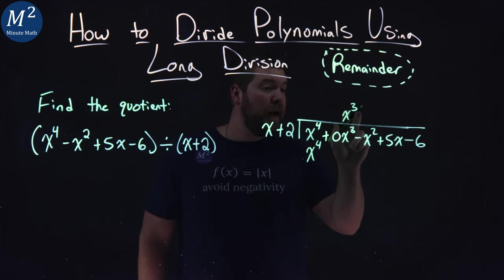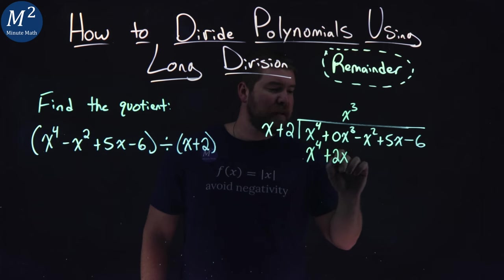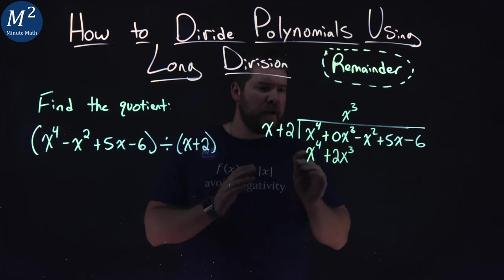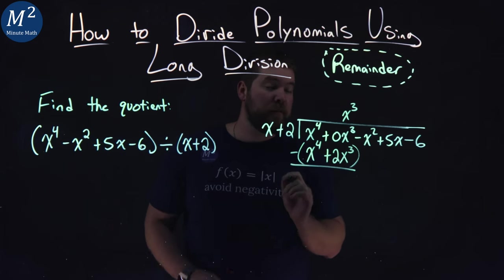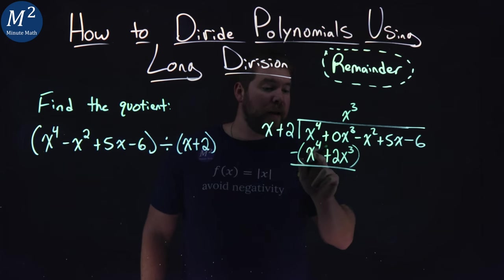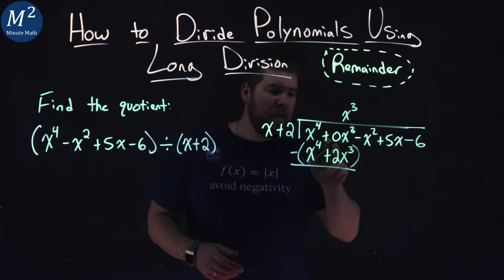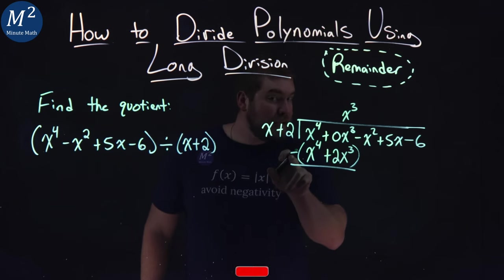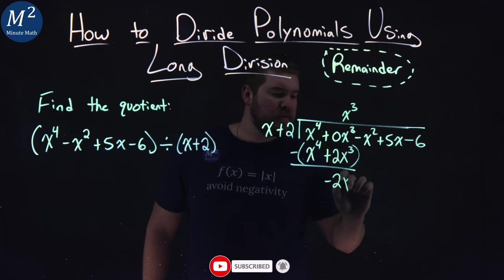From there, we continue on. x to the third times 2 gives us plus 2x to the third. Now we want to subtract the whole new thing we created from what's above. x to the fourth minus x to the fourth equals 0. That was the goal there. 0x to the third minus 2x to the third is minus 2x to the third.